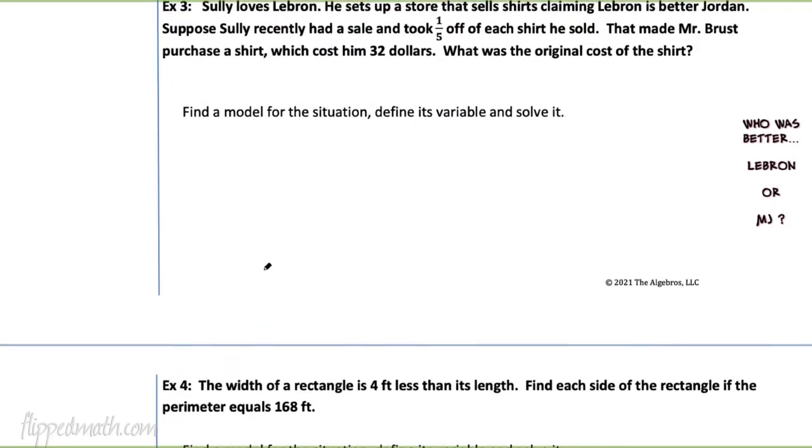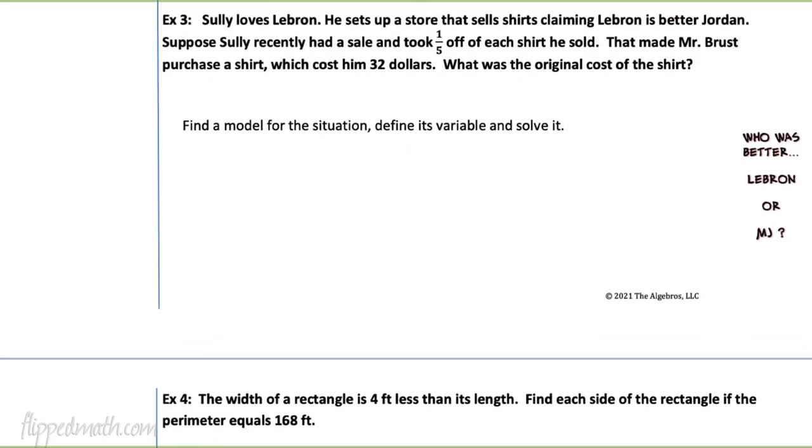Example three. Anybody that knows Sully knows that he loves LeBron. So he sets up a store and he sells shirts. Basically, the shirts claim that LeBron's better than Jordan, so they're all false. But anyways, suppose Sully recently had a sale and took one-fifth off of each shirt that he sold. So he has a price and he's going to take a fifth away. That made Mr. Brust purchase a shirt and it cost him $32. What was the original cost of the shirt?